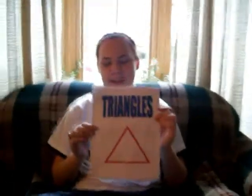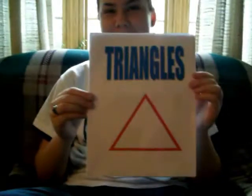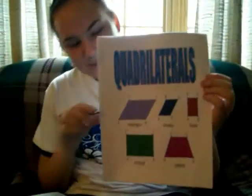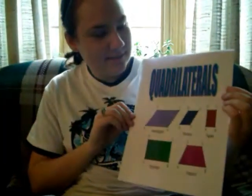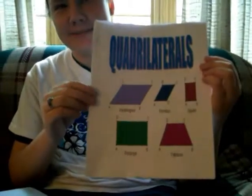Polygons come in many different shapes and sizes. This is a triangle — it has three sides. These are quadrilaterals — they have four sides.